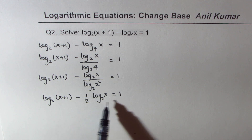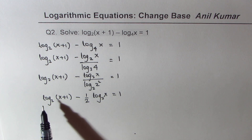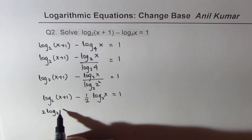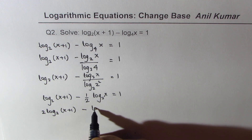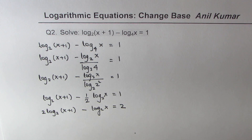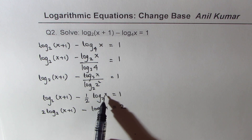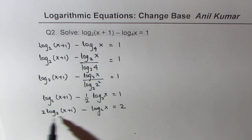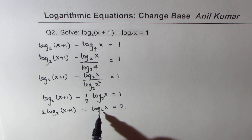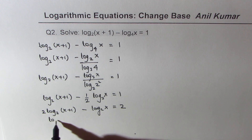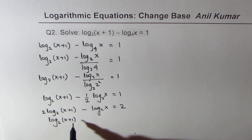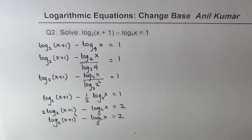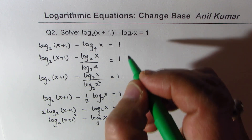So we have log base two of (x plus one) minus one-half times log base two of x equals one. I'll prefer to multiply all terms by two to avoid fractions: two times log base two of (x plus one) minus log base two of x equals two. This avoids dealing with a square root. One more step: log base two of (x plus one) squared minus log base two of x equals two.